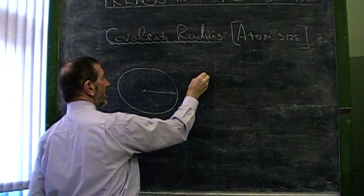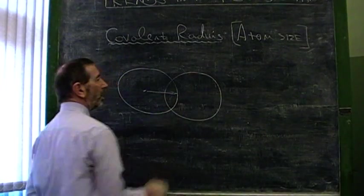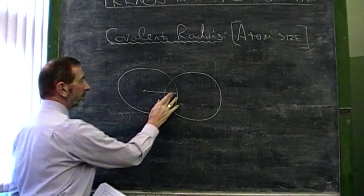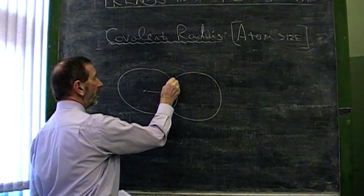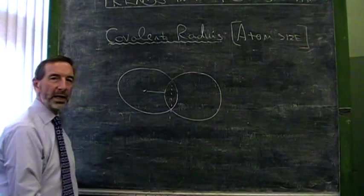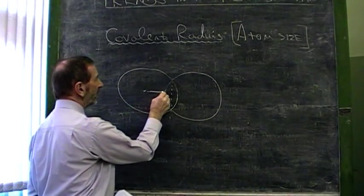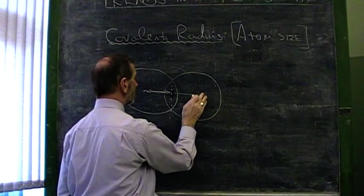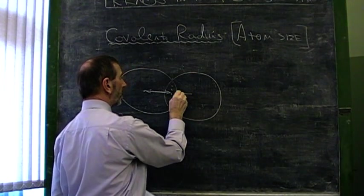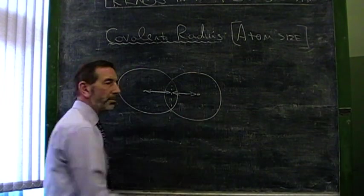But it's the radius in a Covalent Bond. And we can see that when the two atoms overlap, the midpoint isn't quite at the edge of the atom. So the Covalent Radius, strictly speaking, is half the distance between the nuclei of two bonded atoms.